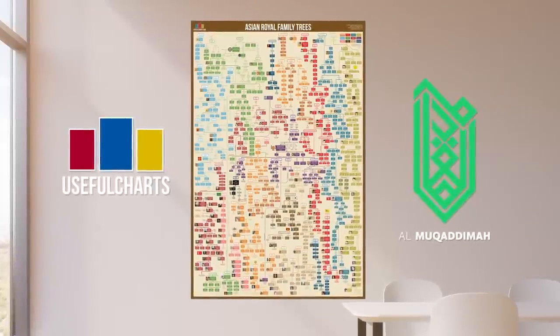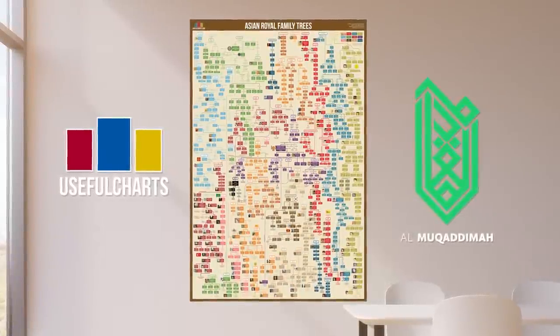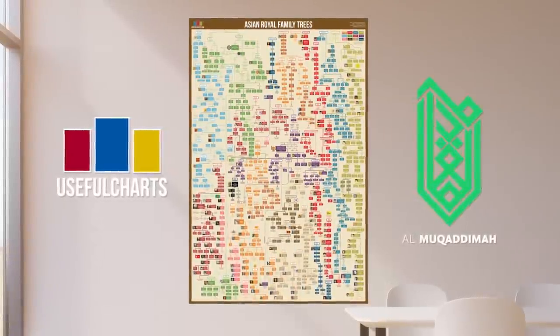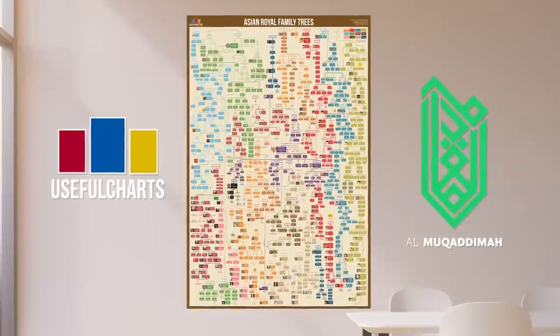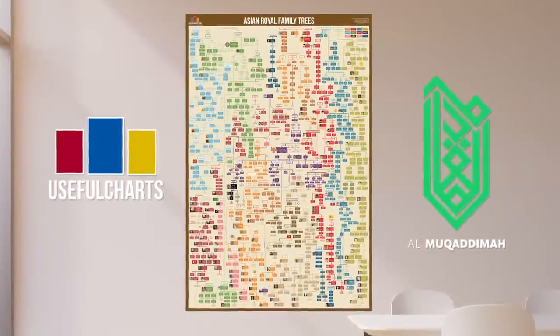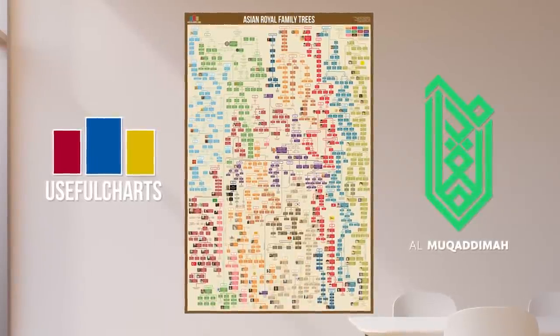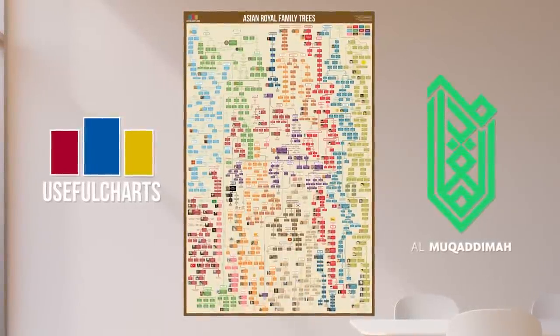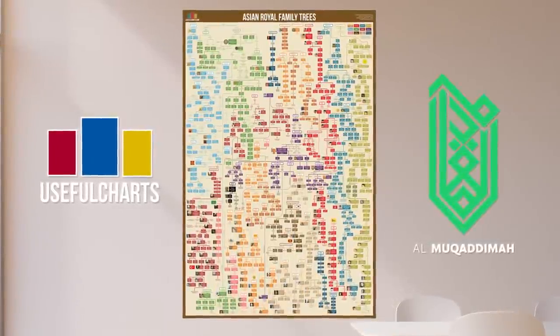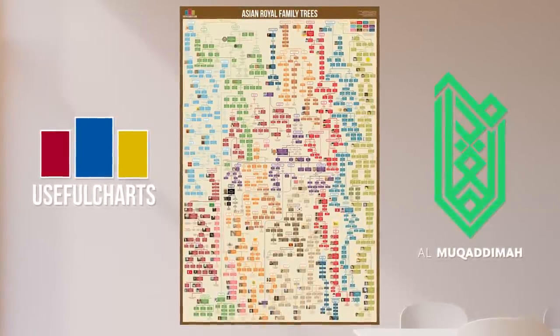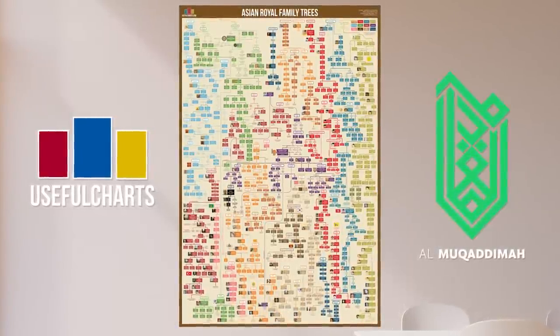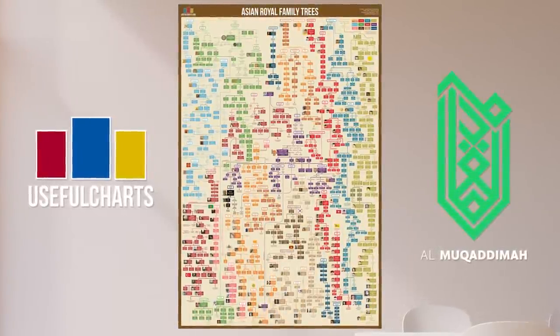In part 2, which can be found on my channel, I'll be tracing the family tree of the Umayyad and Abbasid dynasties, which were the two main caliphates during the early Islamic period. Both of these dynasties are shown on this chart in green.